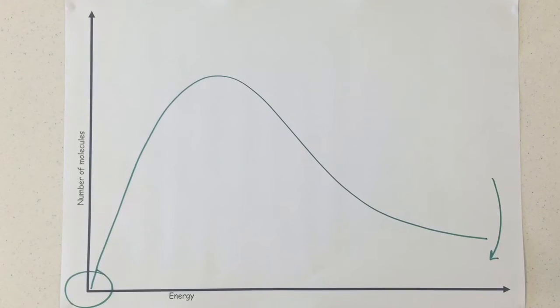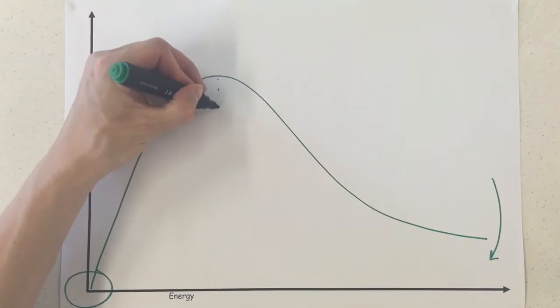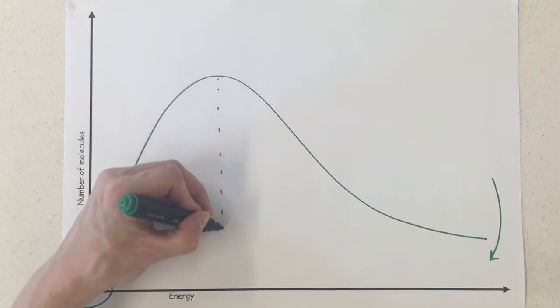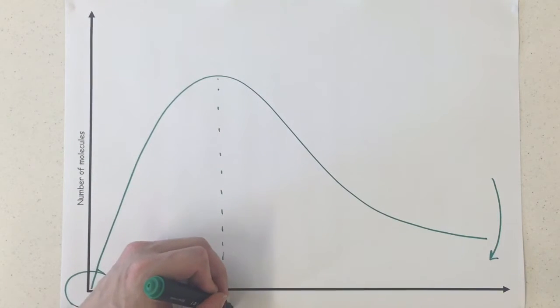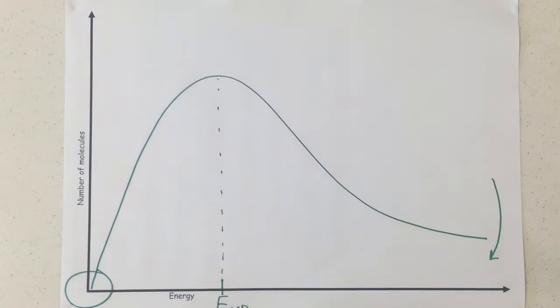Because there's no theoretical maximum energy that a molecule can possess. And if we were looking for our most probable energy, well that would be the peak of the curve, going all the way down here to the energy line, that would be our e most probable, often called the mode.